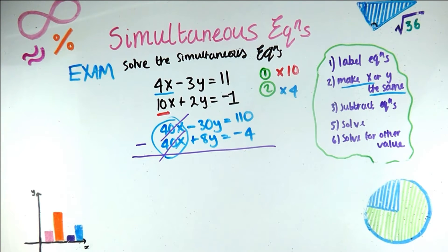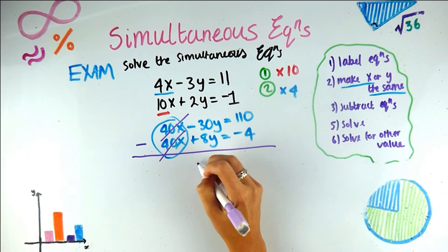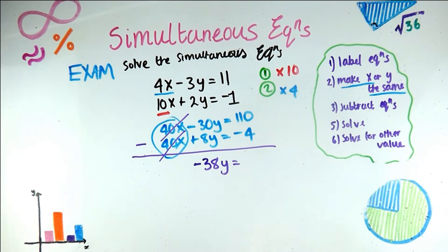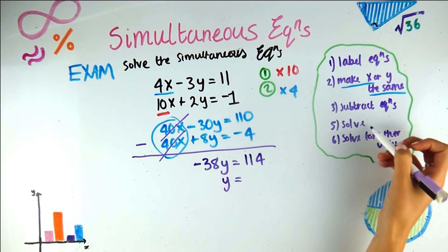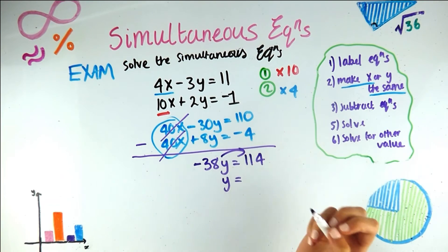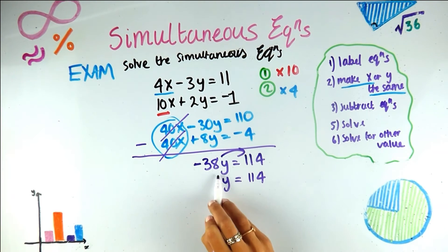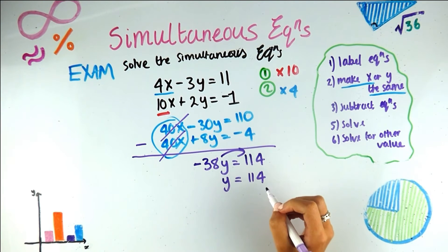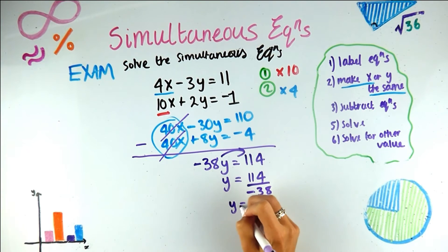So 40x minus 40x is 0. Minus 30y minus 8y is minus 38y. And 110, careful with your minuses, minus minus 4 is 114. Looking for y now. So now we're on step 5, which is solve. So we take the minus 38 over this side. It's multiplication on this side. So we take it over the equal sign. And we're going to do the inverse operation, which is divide. So we divide by minus 38. And that is y is minus 3. So nice number.